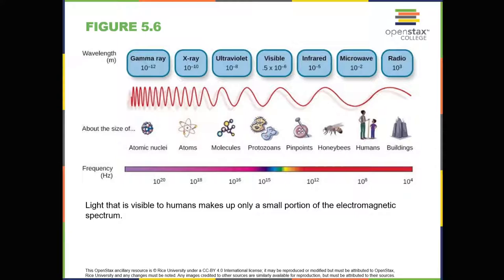Light Waves. The visible spectrum is the portion of the larger electromagnetic spectrum that we can see. As Figure 5.6 shows, the electromagnetic spectrum encompasses all of the electromagnetic radiation that occurs in our environment, and includes gamma rays, x-rays, ultraviolet light, visible light, infrared light, microwaves, and radio waves. The visible spectrum in humans is associated with wavelengths that range from 380 to 740 nm — a very small distance, since a nanometer is one billionth of a meter. Other species can detect other portions of the electromagnetic spectrum. For instance, honeybees can see light in the ultraviolet range, and some snakes can detect infrared radiation in addition to more traditional visual light cues.